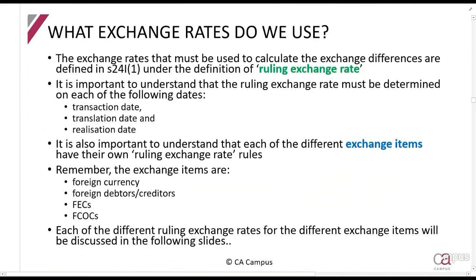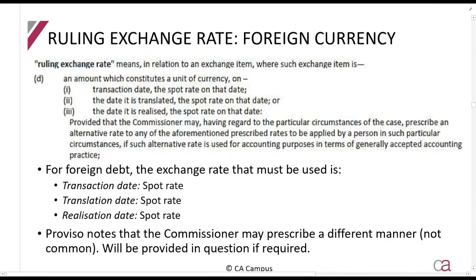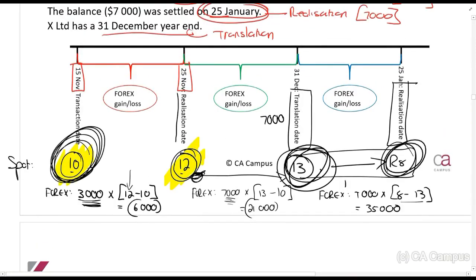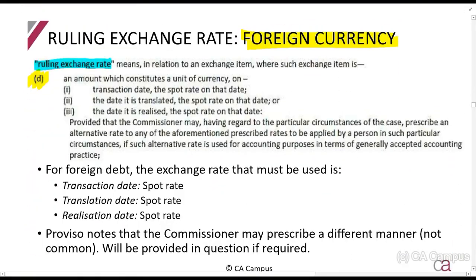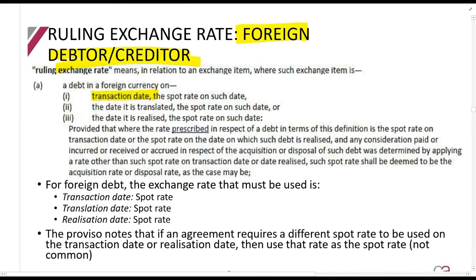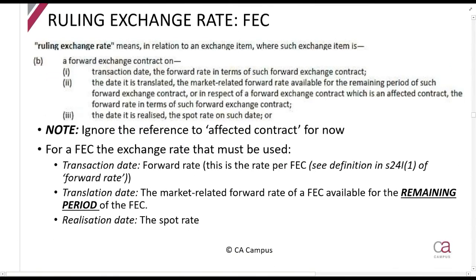How do we know which exchange rates to use? For each exchange item, there is a definition of 'ruling exchange rate.' For foreign currency: use spot rate on transaction date, spot rate on translation date, and spot rate on realization date. For foreign debtors or creditors: similarly, use spot rate on transaction date, spot rate on translation date, and spot rate on realization date. So for these items you always use spot rate.